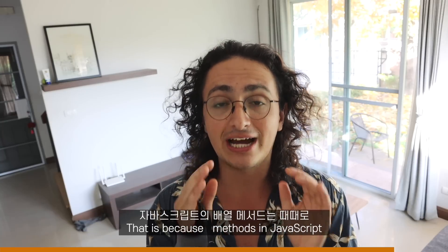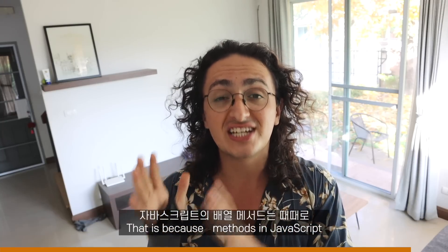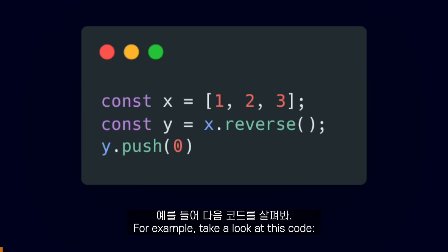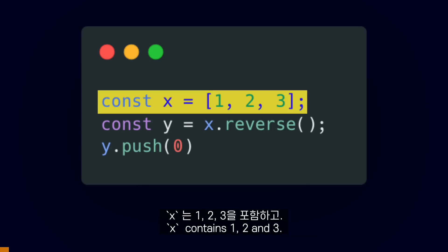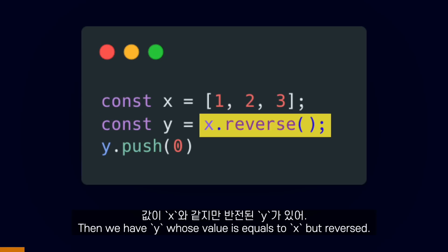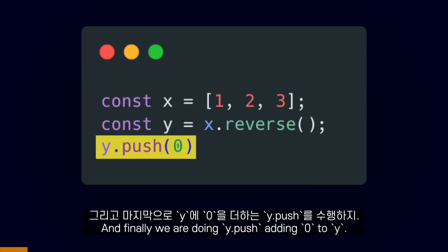That is because array methods in JavaScript can sometimes be confusing. For example, take a look at this code. X contains 1, 2, and 3. Then we have Y, whose value is equal to X but reversed. And finally, we are doing Y.push, adding 0 to Y.